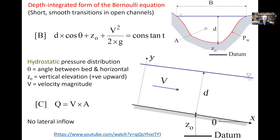In open channel hydraulics, we tend to use a disintegrated form of the Bernoulli equation, which can be written as d·cos(θ) + z₀ + v²/2g equals a constant, where d is the water depth, θ is the angle between the horizontal and the channel slope, z₀ is the bed elevation, and v is the depth-averaged velocity.